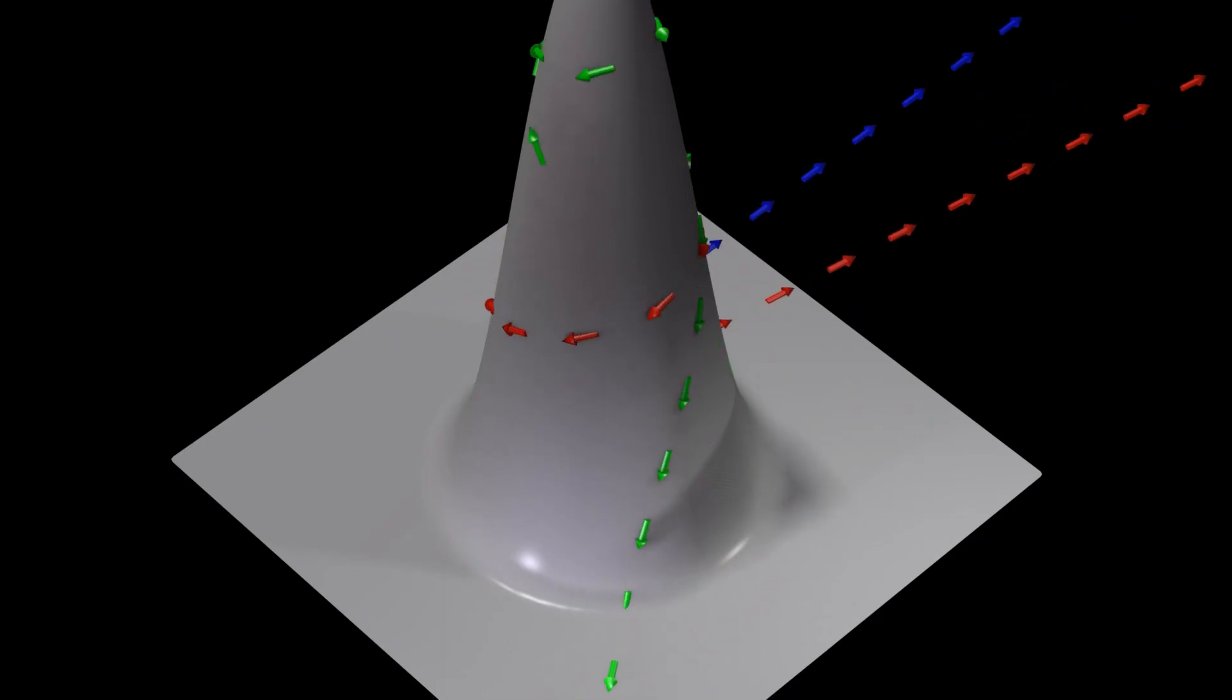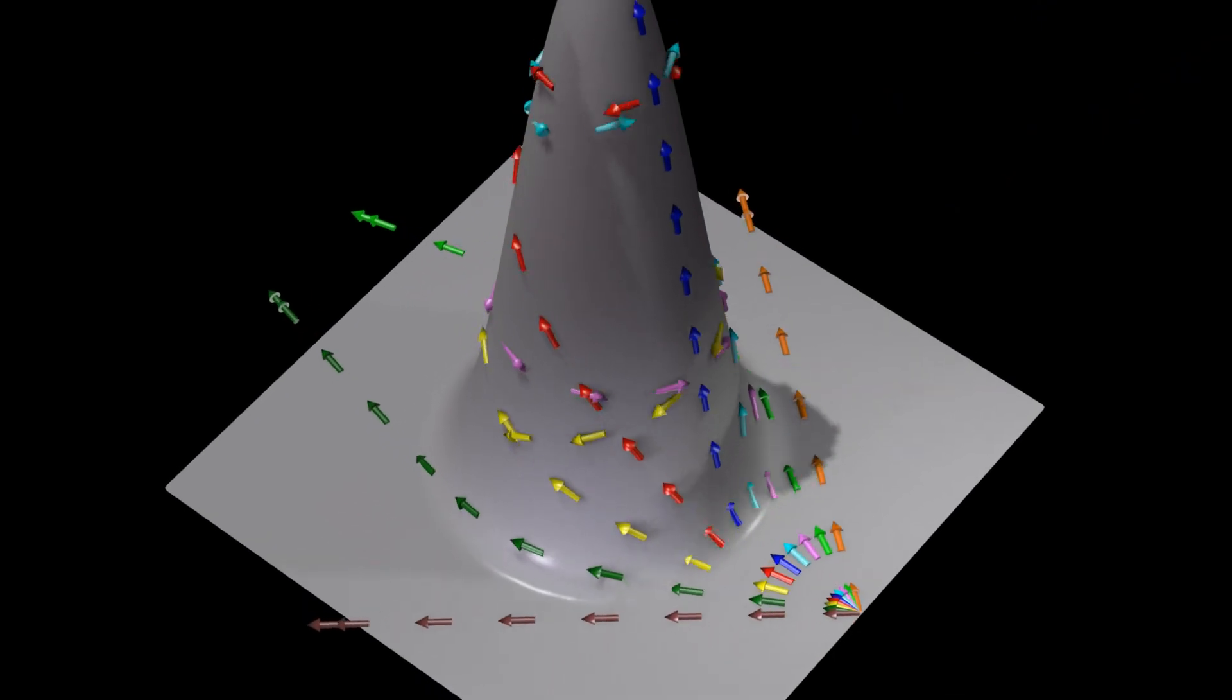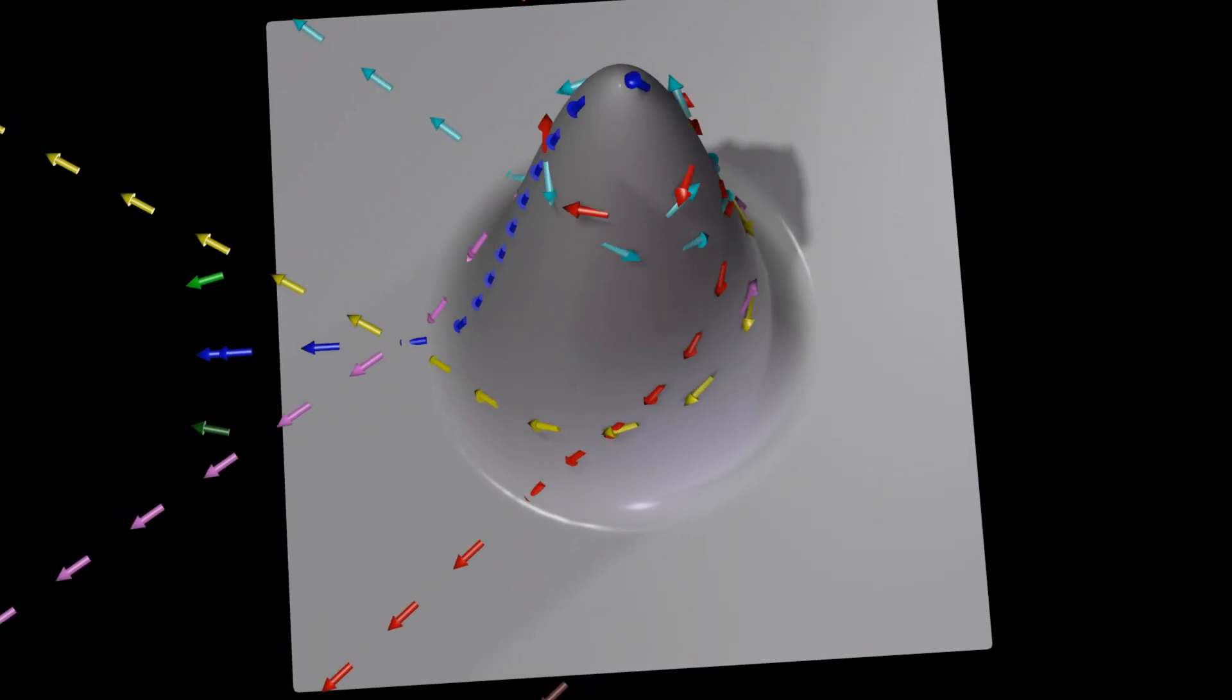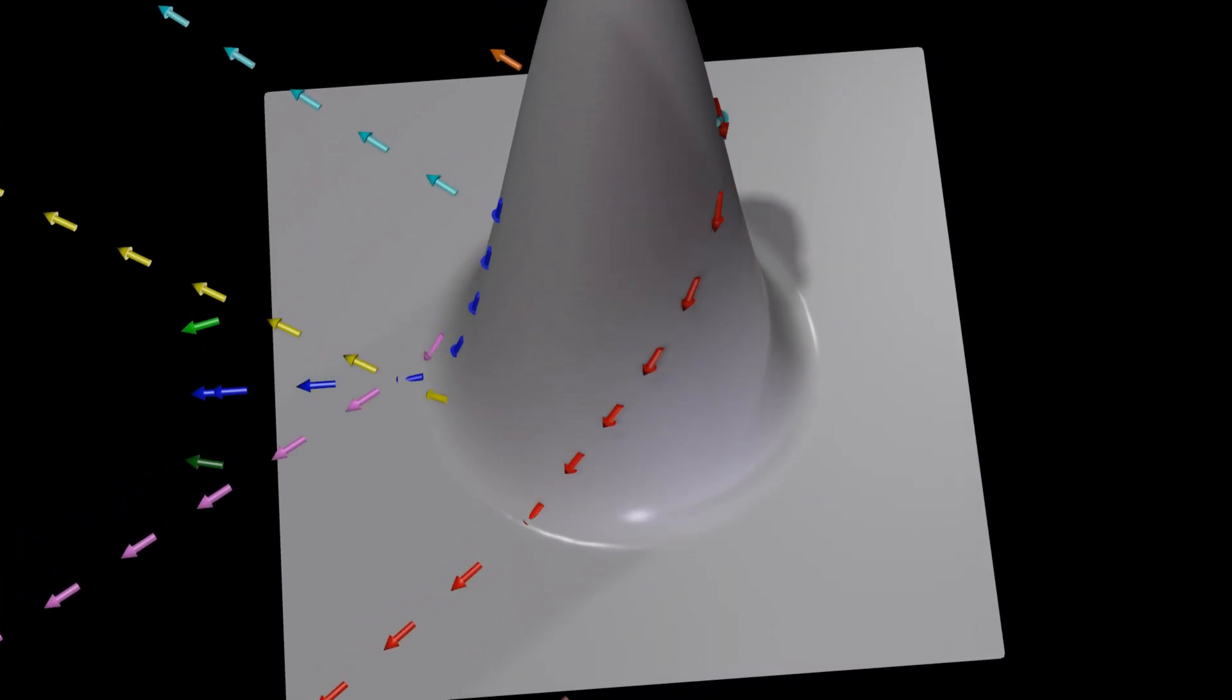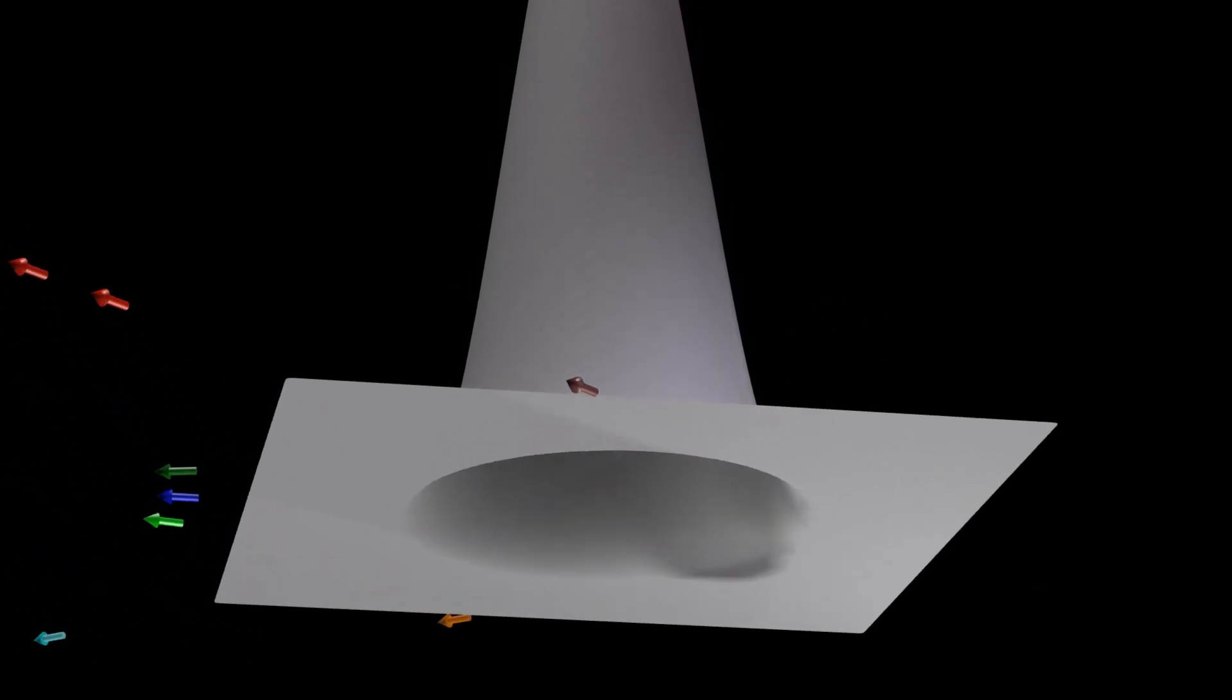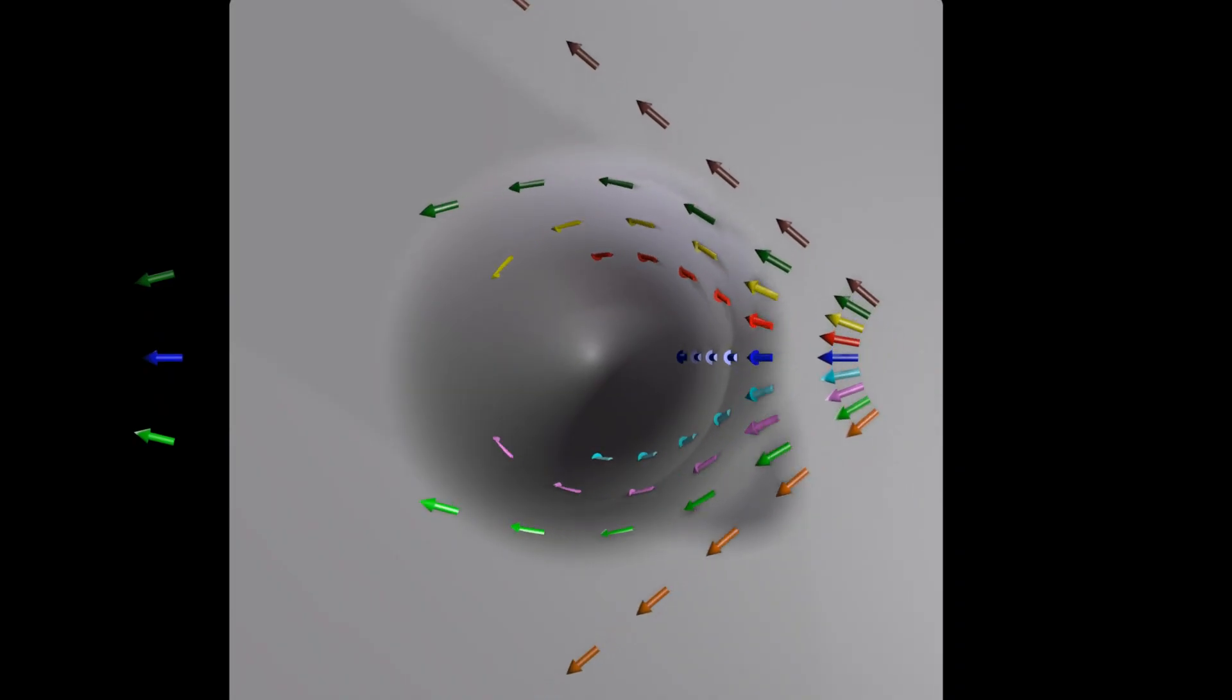Here, each color represents a different geodesic. Suppose we want to get from one side of this hill to the other. The path going directly over the hill is a geodesic, but going around the hill involves a much shorter distance.